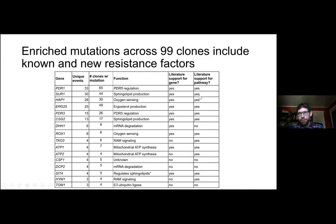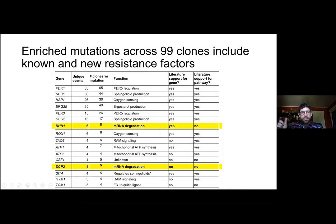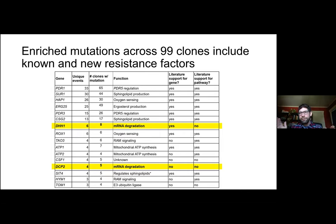Most of these are yes in both columns — reassuring positive controls. But we've got a few that pop out with some no's. One I'm excited about is an mRNA degradation pathway in an organelle called the processing body. Individual factors in this pathway have been shown to impact azole resistance, but the pathway itself has not been implicated. I think there are a few other factors with one or two mutations in this pathway that, when we look at this body of data as a whole, highlights an underappreciated role for this pathway in this very well studied phenotype.